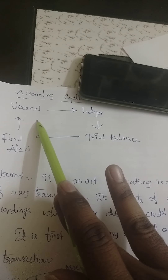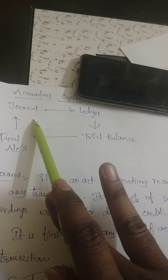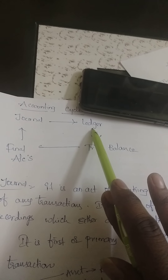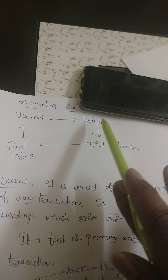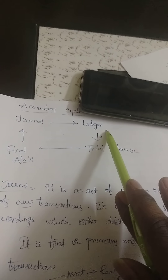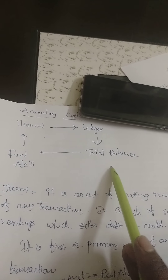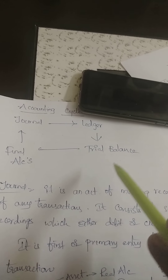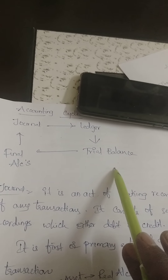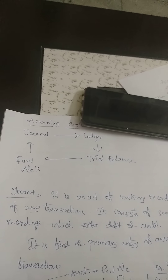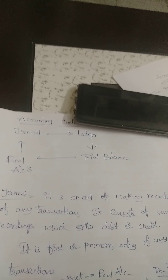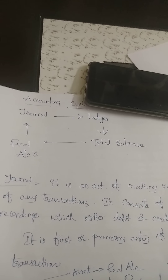The ledger is the secondary recording done by the company. In the trial balance, the company separates debit and credit information clearly. Final accounts are statements prepared by companies to produce to the government and for record-keeping purposes.